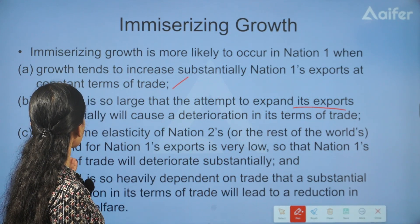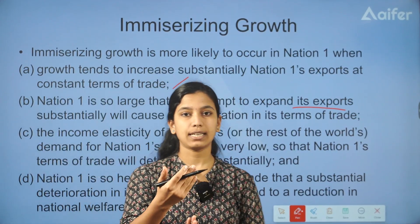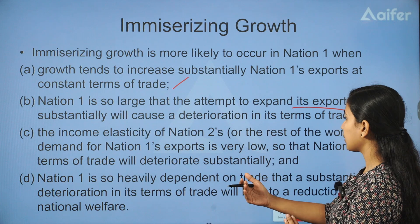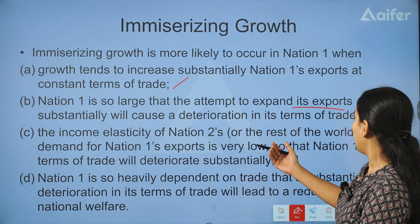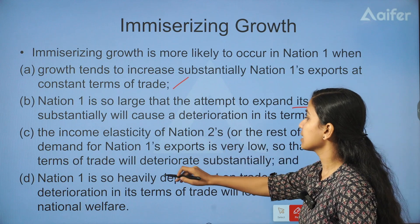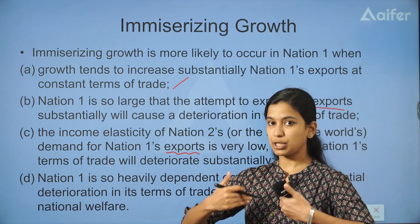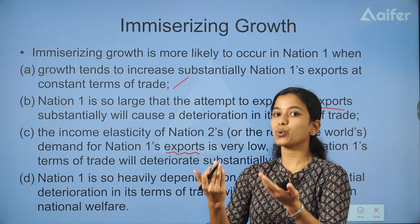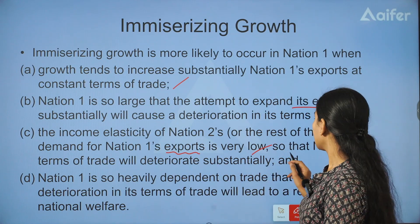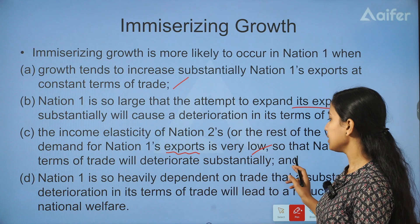The income elasticity of Nation 2 — that is the other nation — Nation 2's income elasticity for Nation 1's exports. Nation 1's terms of trade will deteriorate substantially.